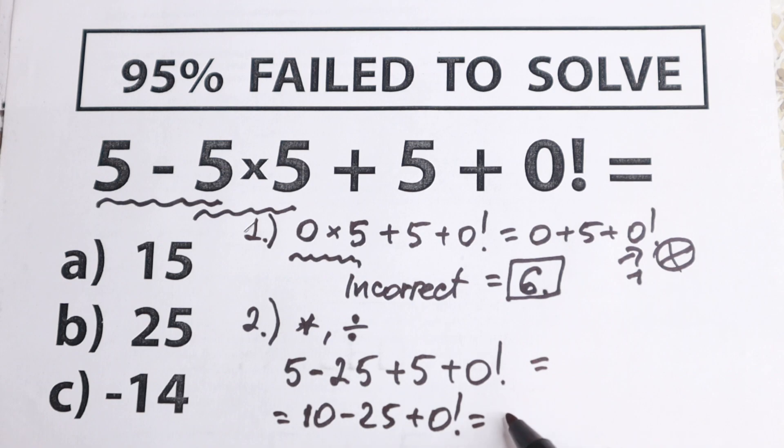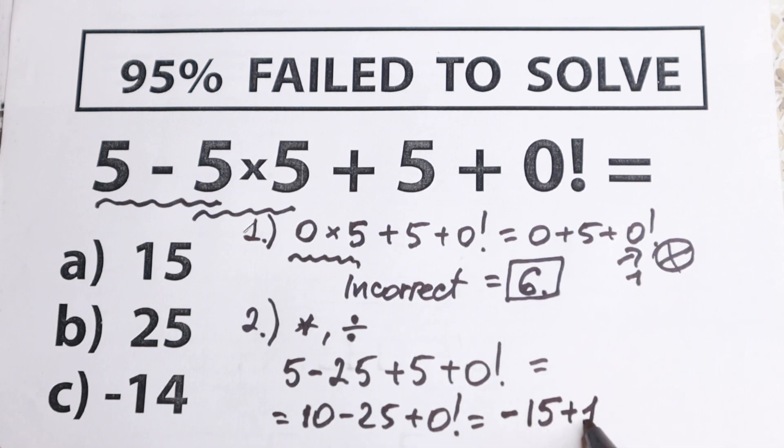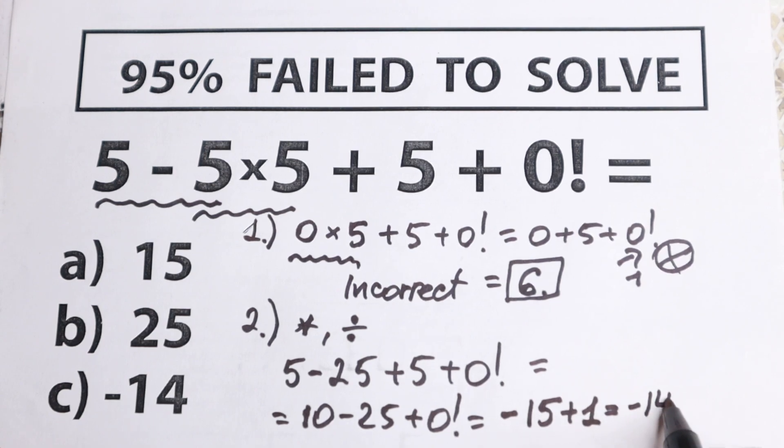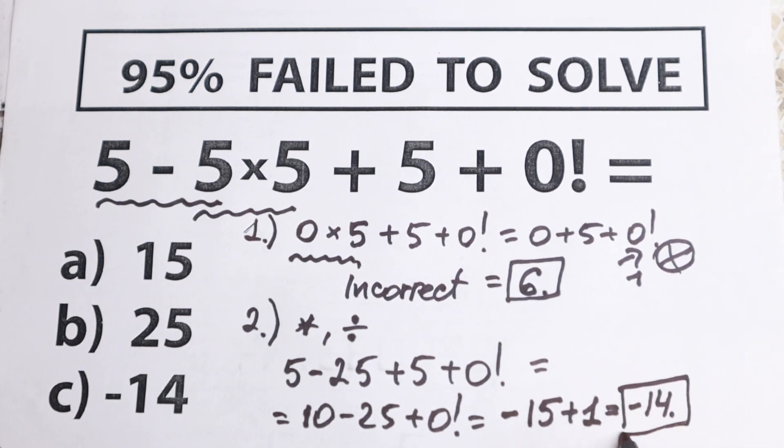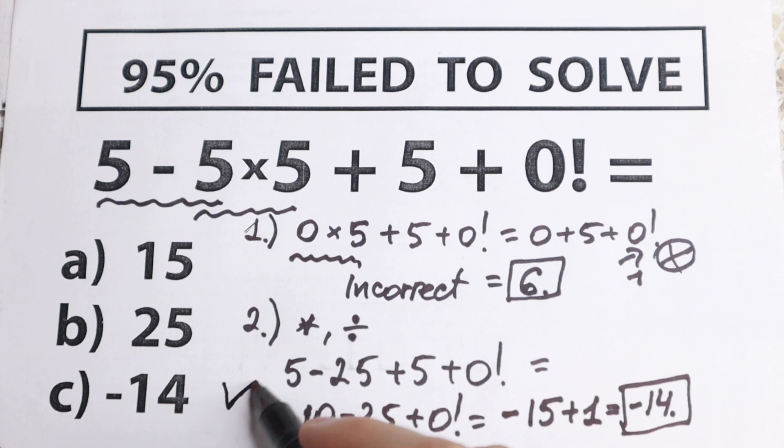As a result, we have 10 - 25 = -15, and plus 1. Of course, the answer is obvious: -14. This is the final and correct answer to this interesting problem.